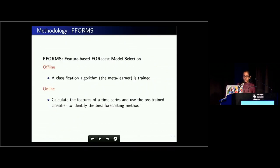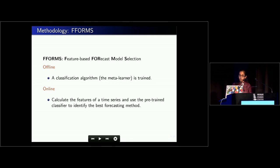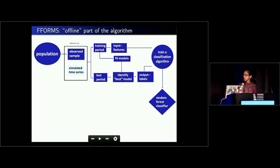This is the methodology. We call this framework feature-based forecast model selection, or FORMS. This consists of two phases: an offline phase and an online phase. During the offline phase of the algorithm, we train the classifier or meta-learner. When the online phase is activated, we calculate the features of the new time series and pass it to the pre-trained classifier to identify the suitable forecasting method. In order to train the algorithm, we need to have a large collection of time series. We assume we have a large population of time series and then take a sample of observed time series.